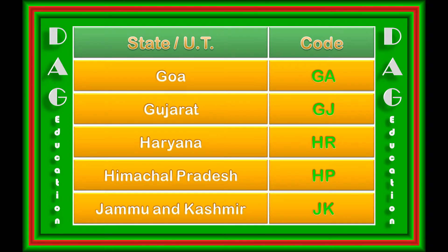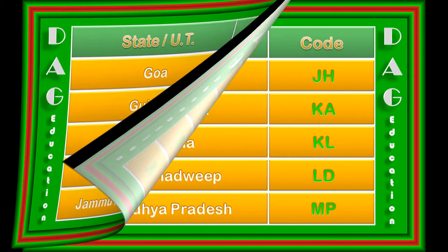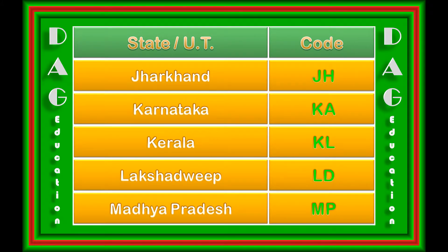Goa: GA. Gujarat: GJ. Haryana: HR. Himachal Pradesh: HP. Jammu and Kashmir: JK.